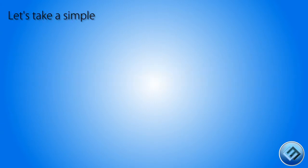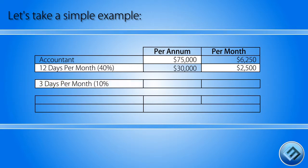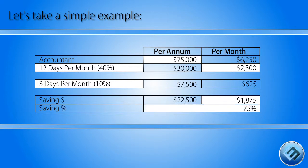Let's take a simple example. Say you have an accountant on $75,000 working on a tough reconciliation every month. If they spend 12 days per month on that piece of work, that's costing your business $2,500 every month. Now let's say we can simplify and automate that reconciliation so it only takes the same accountant three days a month to complete — that works out to a saving of $1,875 every month for one reconciliation, a cost saving of 75%.